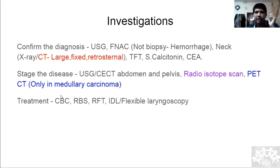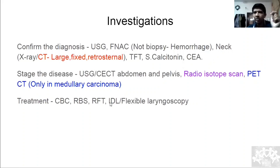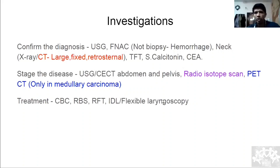For treatment purposes: get a complete blood count, blood sugar, RFT, and do indirect laryngoscopy or flexible laryngoscopy. Laryngoscopy is not for assessing the disease but for treatment planning — many patients can have a paralyzed vocal cord without any hoarseness. So for purely medico-legal purposes, laryngoscopy is done pre-operatively.